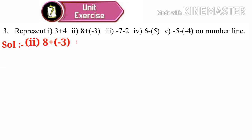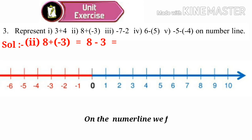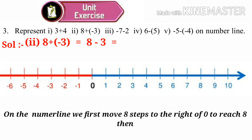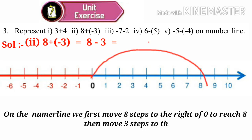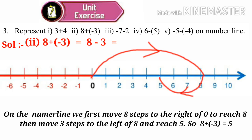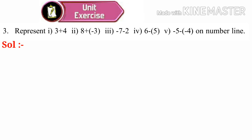Number 2: 8 plus (minus 3) is equal to how much? Plus into minus is minus, so 8 minus 3. On the number line, we start at 8 and then move 3 steps to the left of 8 and reach 5. So 8 plus (minus 3) is equal to 5.